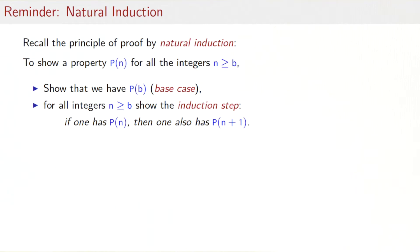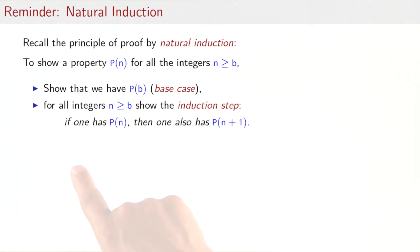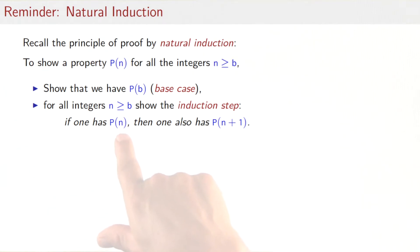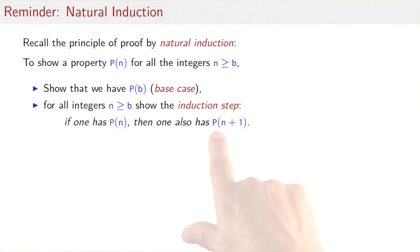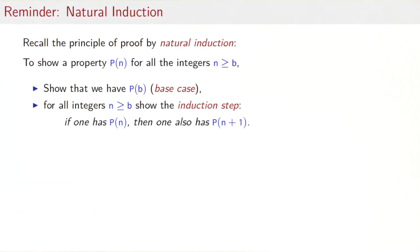Then for all other integers, you need to show the induction step. The induction step is that if you assume P(n), then you can conclude that P(n+1) also holds. If you have proven that, then the principle of natural induction says that the property P holds for all integers greater or equal to b.